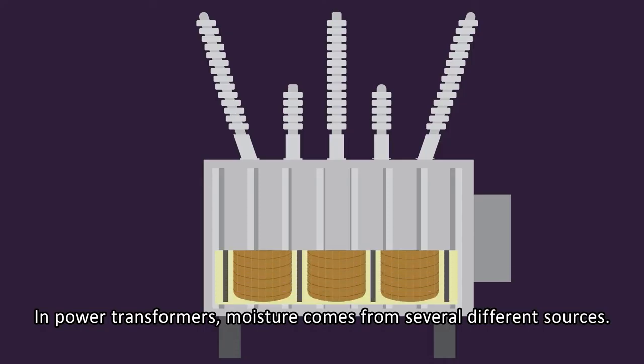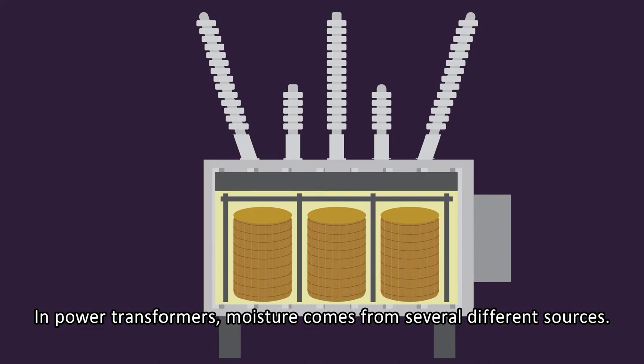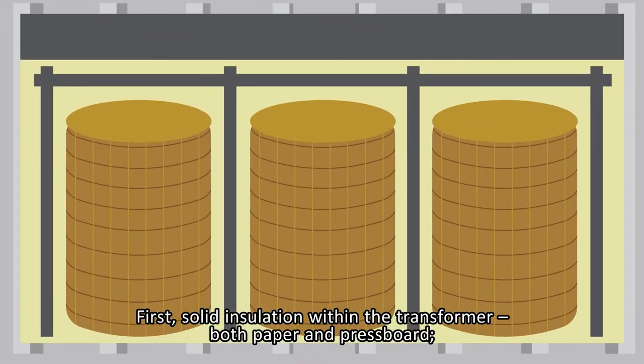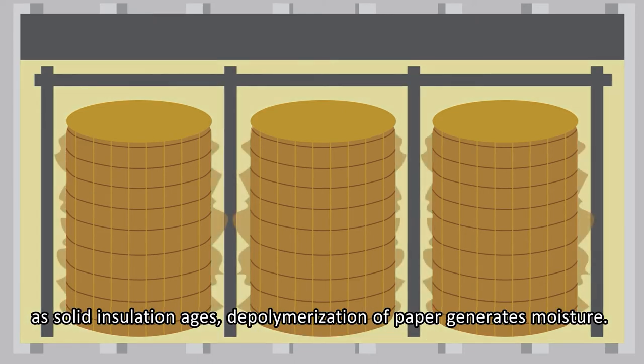In power transformers, moisture comes from several different sources. First, solid insulation within the transformer, both paper and pressboard. As solid insulation ages, depolymers of paper generates moisture.